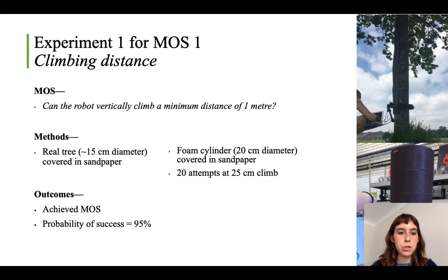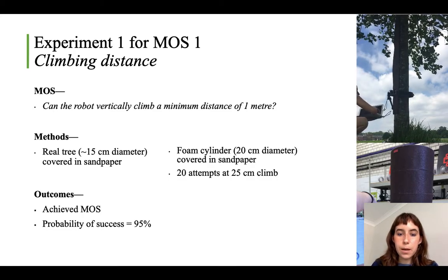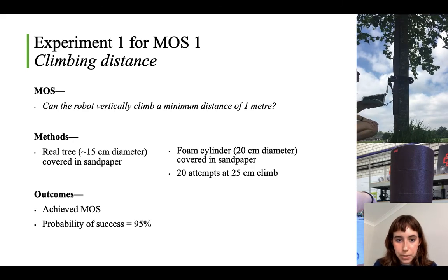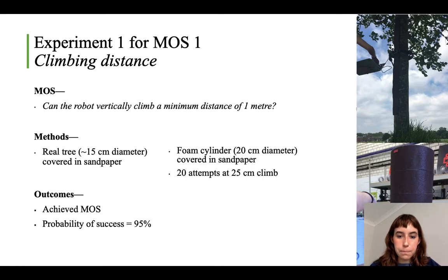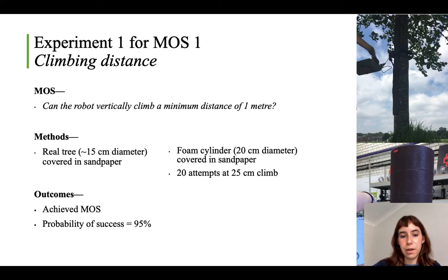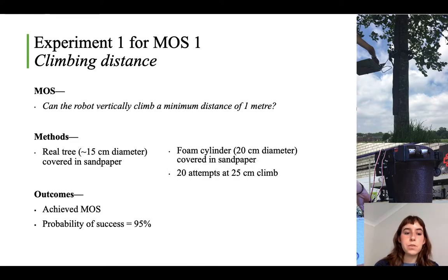Experiment one tested measure of success one — climbing distance. The question was: can the robot vertically climb a minimum distance of one meter? I used a real tree roughly 15 centimeters in diameter covered in sandpaper, and as you can see in the top video it did achieve a one-meter climb. I also used a foam cylinder to assess probability of success, carrying out 20 attempts at a 25-centimeter climb and achieving 95% probability of climbing success. The one failure was due to wires coming undone in the electronics, so overall it was pretty reliable.